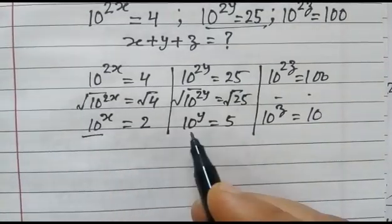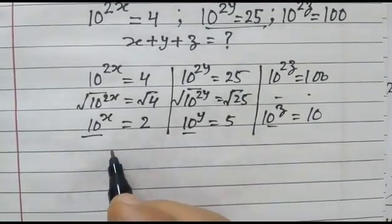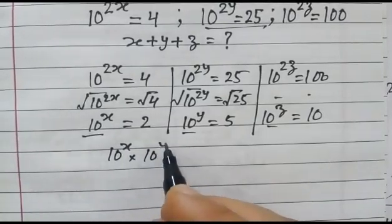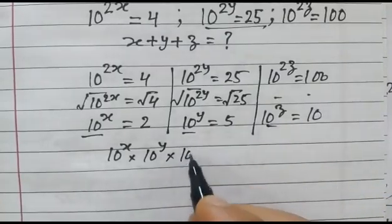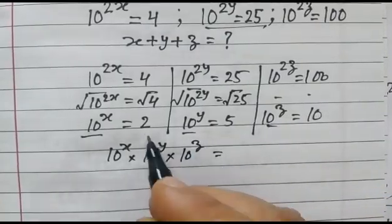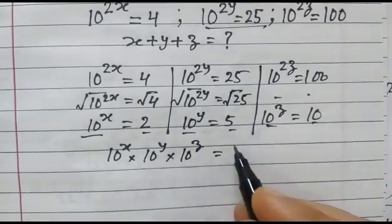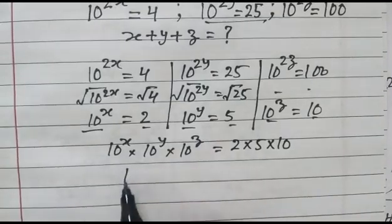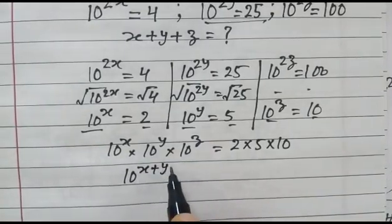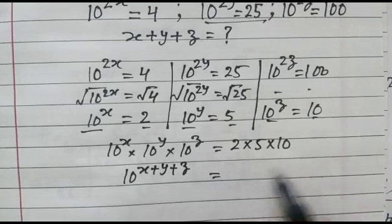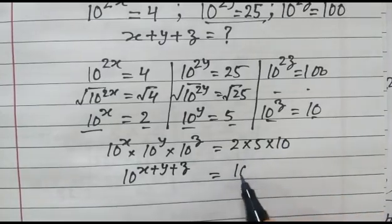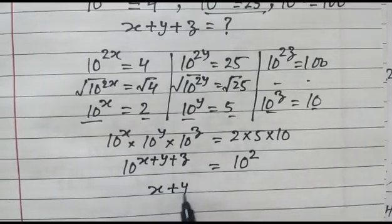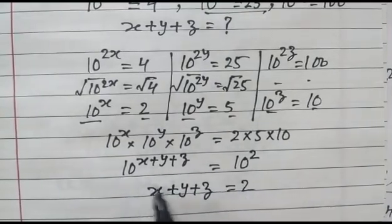Now we multiply these. 10 to the power x into 10 to the power y into 10 to the power z is equal to 2 into 5 into 10. So 10 to the power x plus y plus z is equal to 100, or we can say 10 to the power 2. So x plus y plus z is equal to 2.